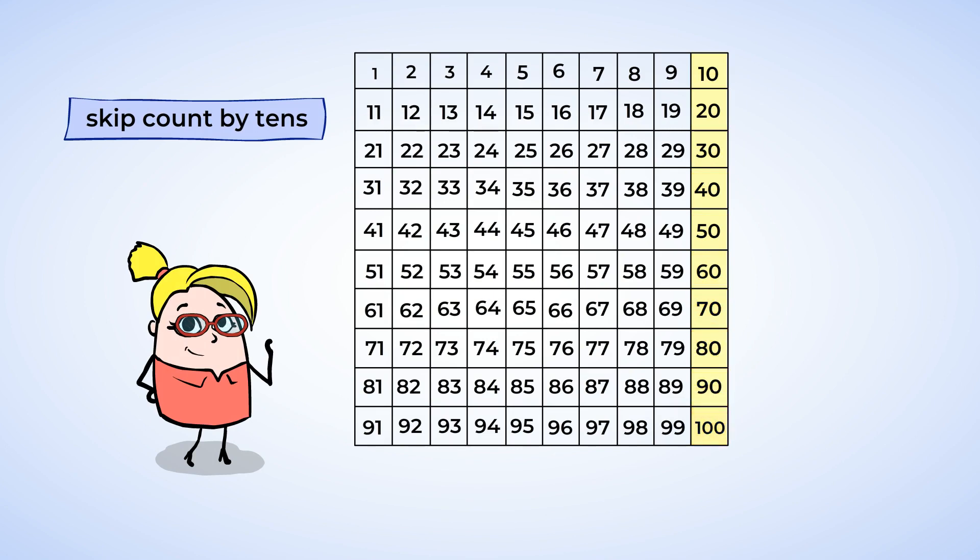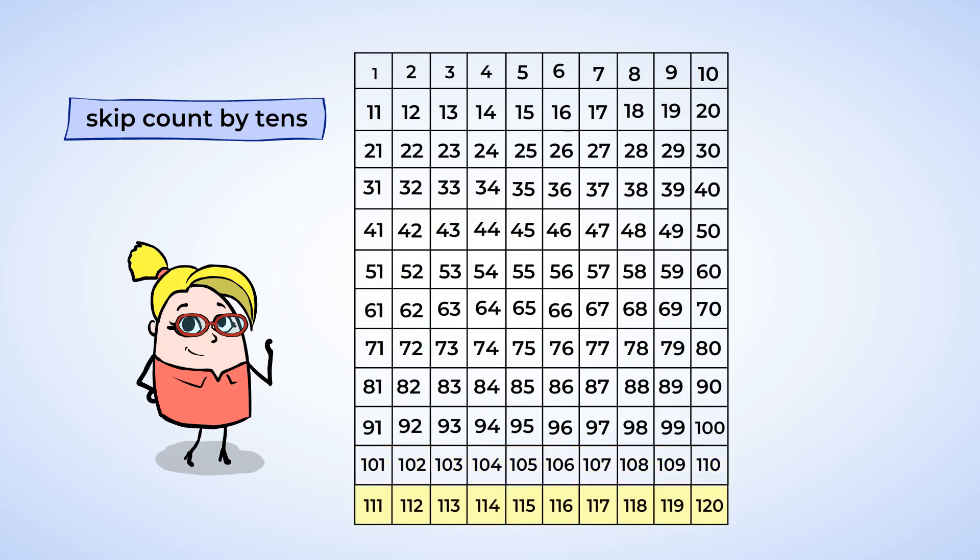By the way, what number comes next? Do we have to stop at 100? What number comes after 100? It's 101, 102, 103, and so on, counting just like before, but with 100 at the beginning of the number. We can even add a few more rows to the hundreds chart to make it go up to 120. Nice review!